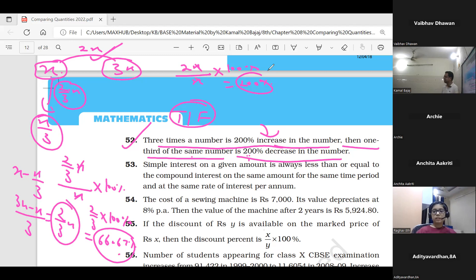So the percentage decrease is 66.66%, approximately 67%. Therefore, this statement is false. The decrease is not 200%; it's only about 67%. The statement is false.